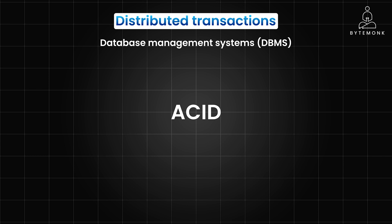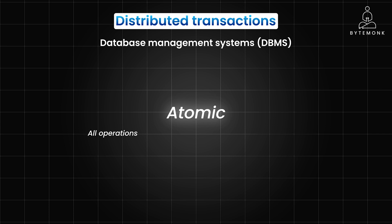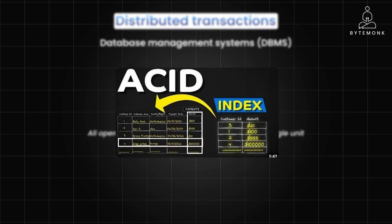When you execute a transaction within a single database, the DBMS ensures that the transaction behaves in an atomic, consistent, isolated, and durable manner. For example, if a transaction is atomic, all operations in the transaction are treated as a single unit — either all of them succeed or none of them do. You can check out my video on ACID where I break down each of the ACID principles with simple practical examples.